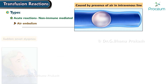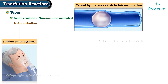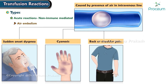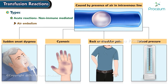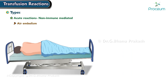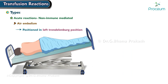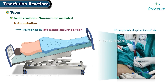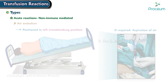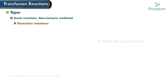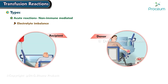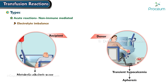Air embolism is caused by presence of air in the intravenous line, resulting in sudden onset dyspnea, cyanosis, back or shoulder pain, and decrease in blood pressure. With the onset of such symptoms, the patient should be positioned in the left Trendelenburg position, and if required, aspiration of air must be carried out. Electrolyte imbalance can occur in both recipients and donors — transient hypocalcemia in donors leading to apheresis, and metabolic alkalosis in recipients. Symptomatic management is sufficient.